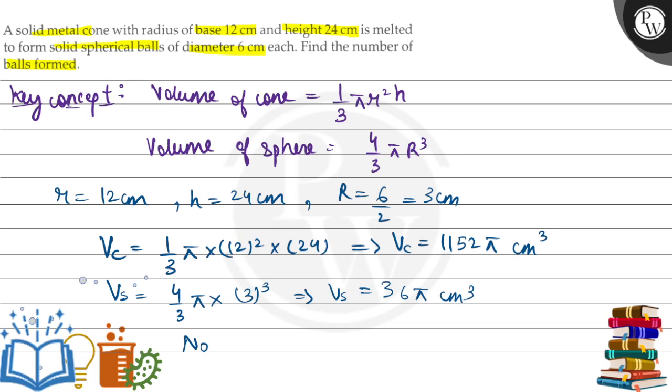Number of spheres will be equal to Vc upon Vs. Vc is 1152π upon 36π. Pi and pi cancel, and the answer comes out to 32.